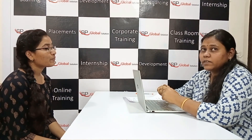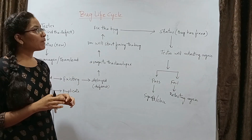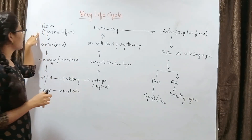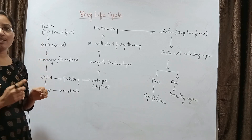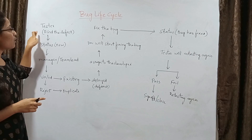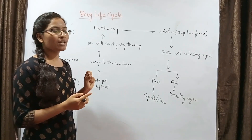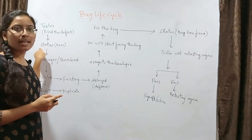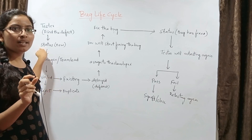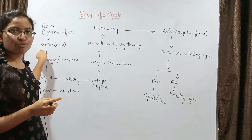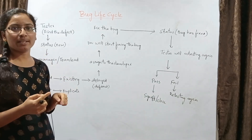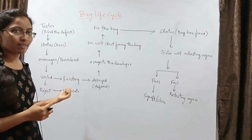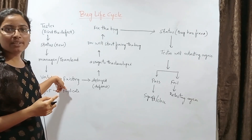Can you explain the bug life cycle? Yes, ma'am. Shall I explain on the board? Yes, there is a board — please write and explain. Today I am explaining the bug life cycle. After the developer has written the code, the tester tests the code. If we find defects, we give the status as 'New.' The defect is then handed over to the manager or team leader, who assigns it to the developer to check whether it is a bug or defect.